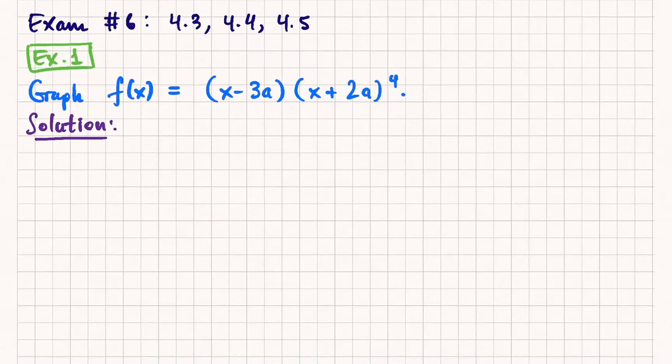So we got this function. This was one of the problems on the written homework that you would have had to do. So graph this function. The number a is an unspecified constant. I did say it was positive. So that's actually important. So assume a is positive.